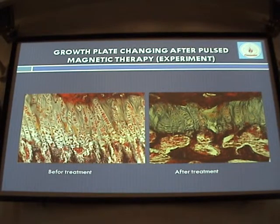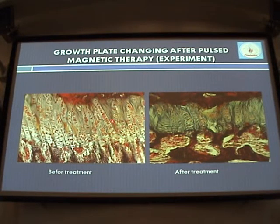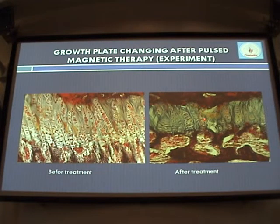These are very illustrative slides — you can see before and after treatment. The right-hand side shows the growth plate after chronic exposure to magnetic field impulses of 1.5 Tesla. There is deformation of the chondrocyte columns, parts with no cells at all, and the width of the growth plate is much smaller — this is the beginning of the closing of the growth plate.